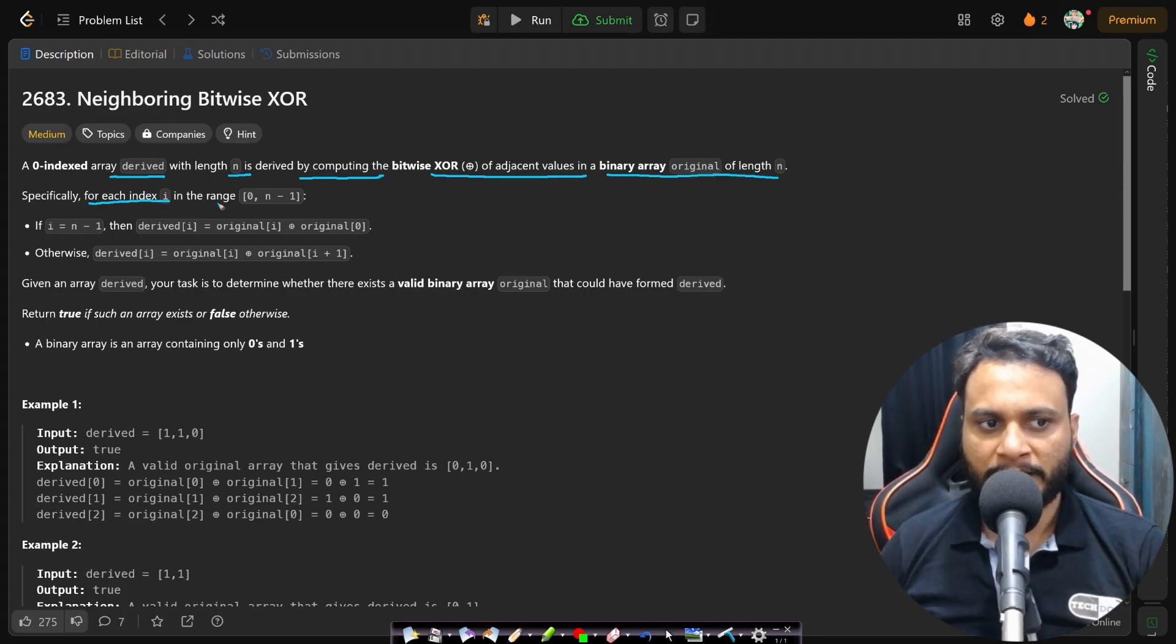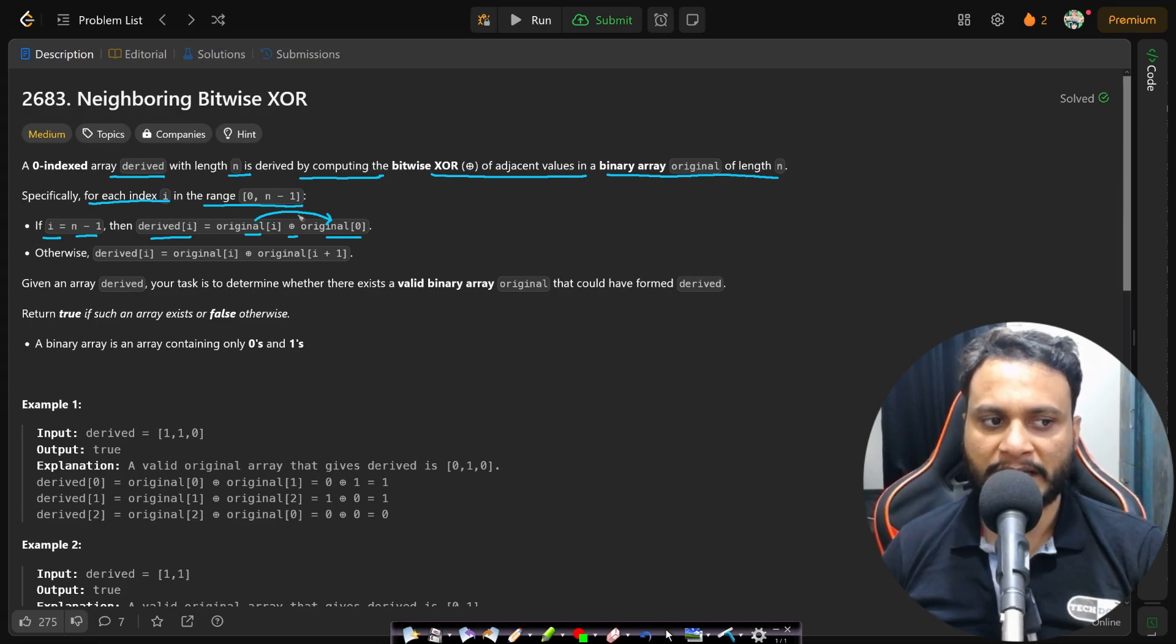Specifically, for each index i in the range 0 to n-1, if i equals n-1, then derived[i] will be the bitwise XOR between the ith element and the first element—that means the last element and the first element of the original array. Otherwise, in any general case, derived[i] will be original[i] XOR original[i+1].